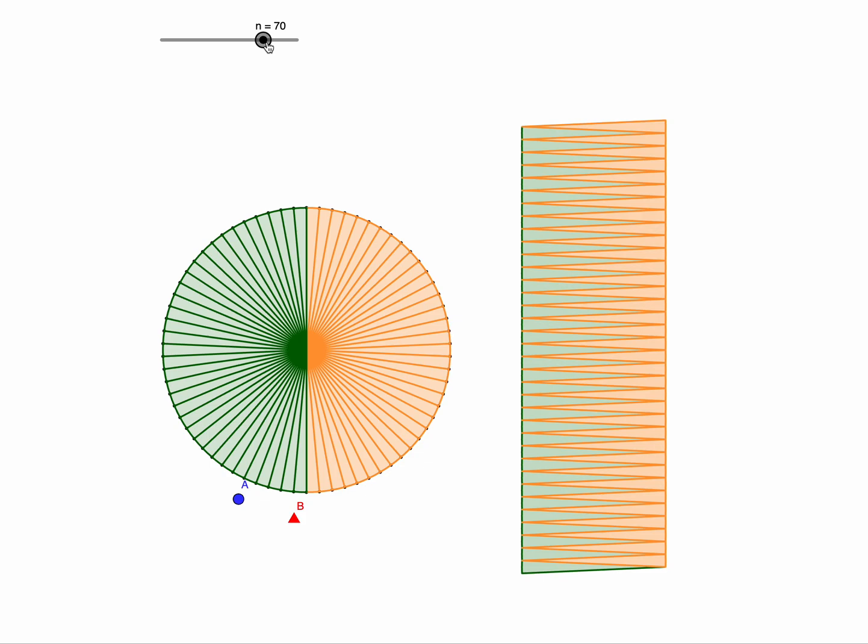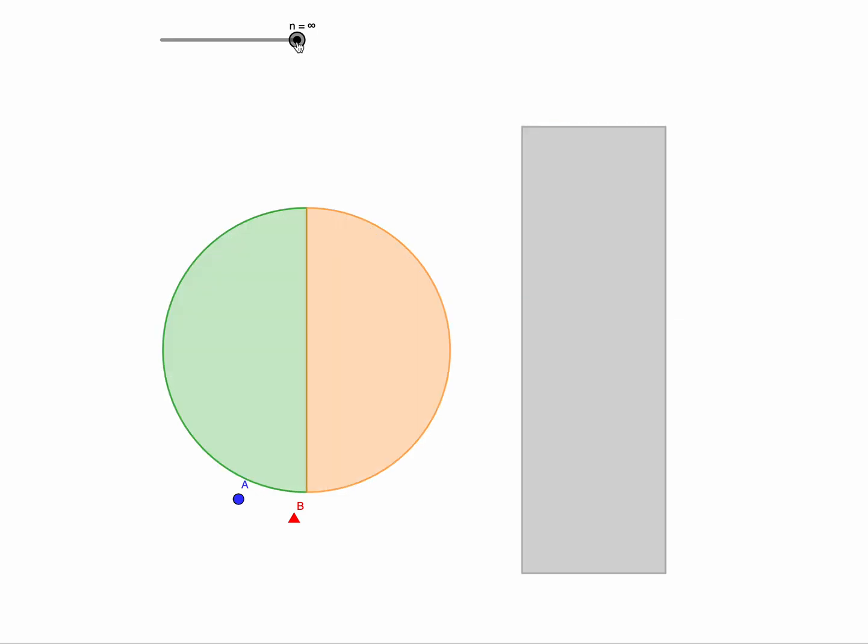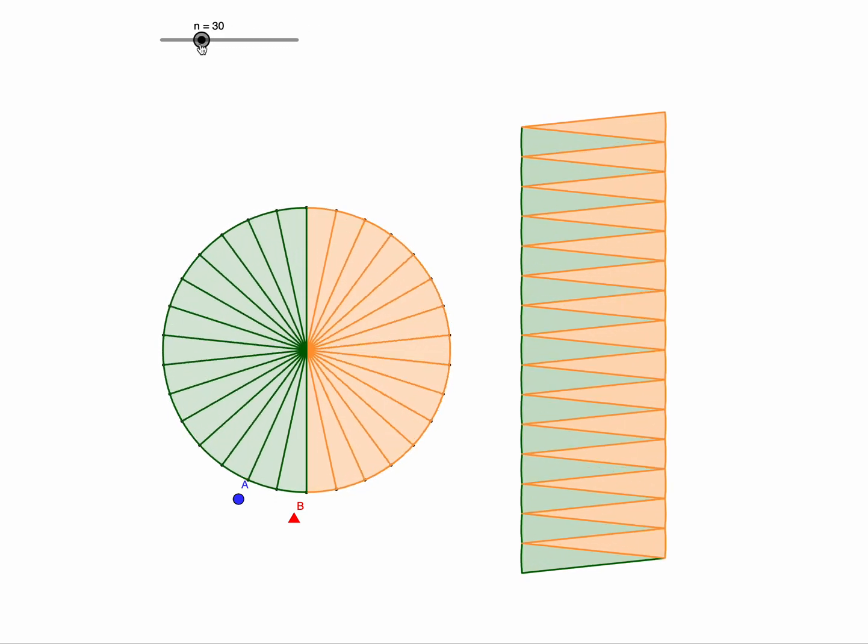and as we get more and more, the shape on the right becomes more and more like a rectangle, and we can push it all the way to infinity. There we go. So we've got an infinite number of wedges there, and they've all become smooshed together to make that grey rectangle on the right.